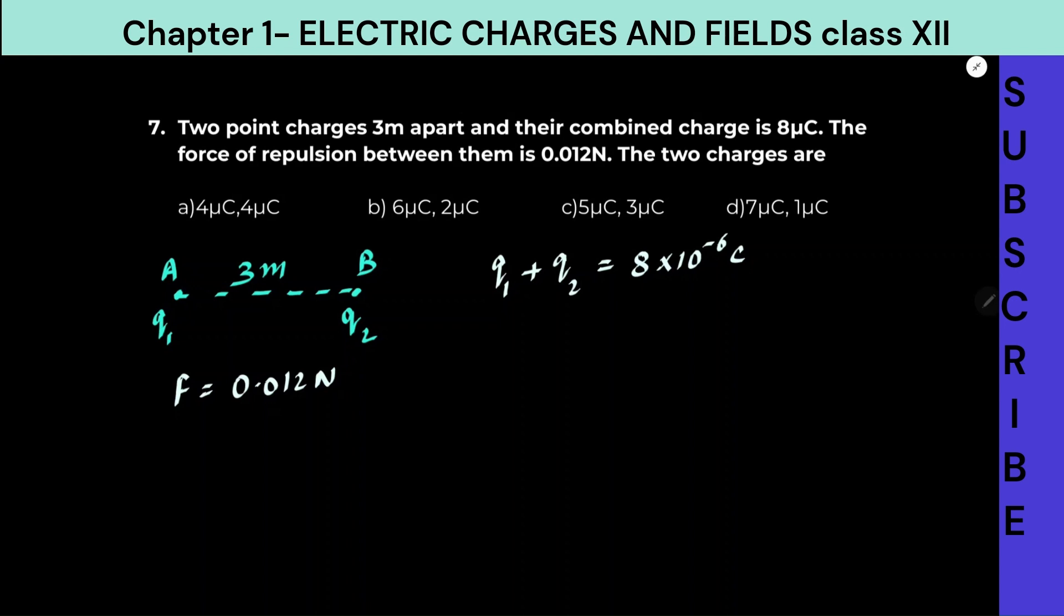Now a direct trick can be, why cannot you add all these charges which are given in the option and check if they are 8, we can get directly the answer. But if you see surprisingly, 4 plus 4 is 8 here, 6 plus 2 is 8 here, 5 plus 3 is 8. So that will not work. You have to actually solve the problem because the sum of all of them are 8 only.